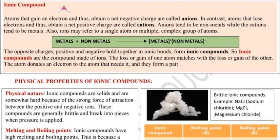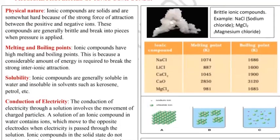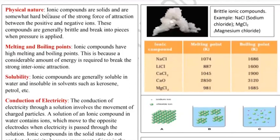Now, these are the ionic compounds. What are the properties of ionic compounds? First, the physical nature: ionic compounds are solid and somewhat hard because of the strong force of attraction between the positive and negative ions. One has a need of electrons and one has more electrons, so they share through donation. That's why they have strong force of attraction and are generally solid and somewhat hard.